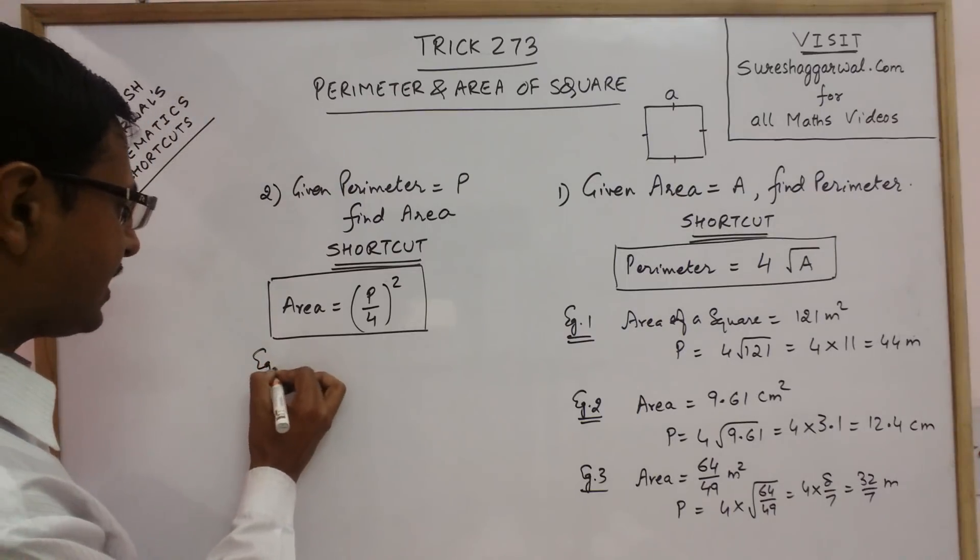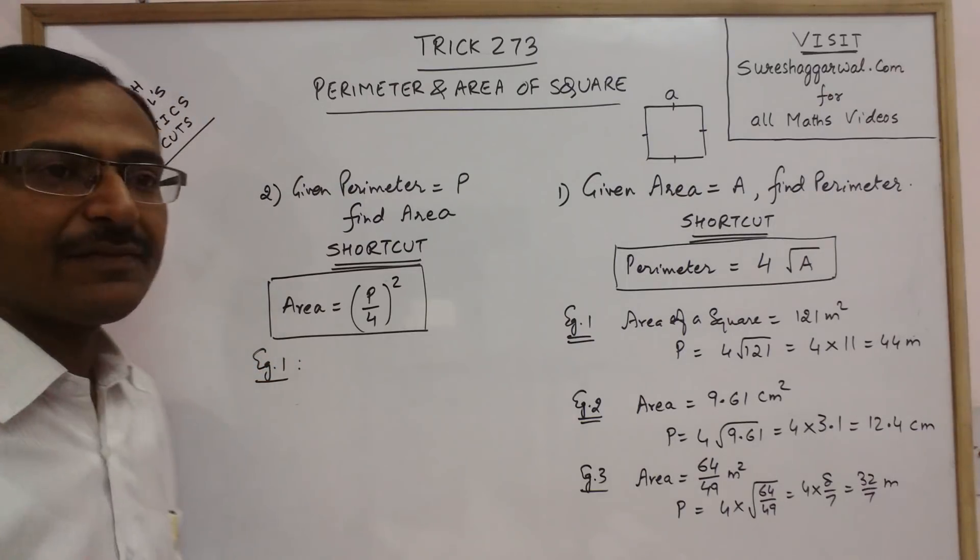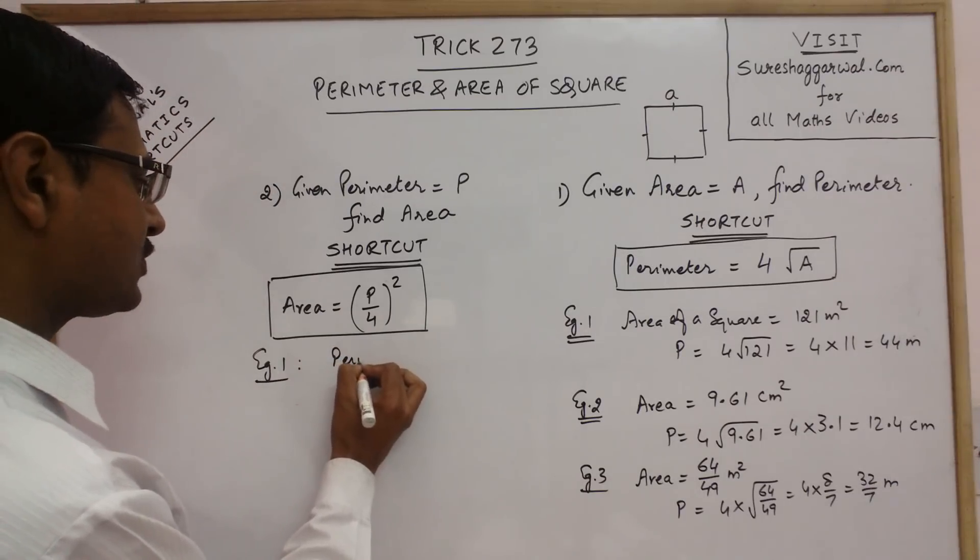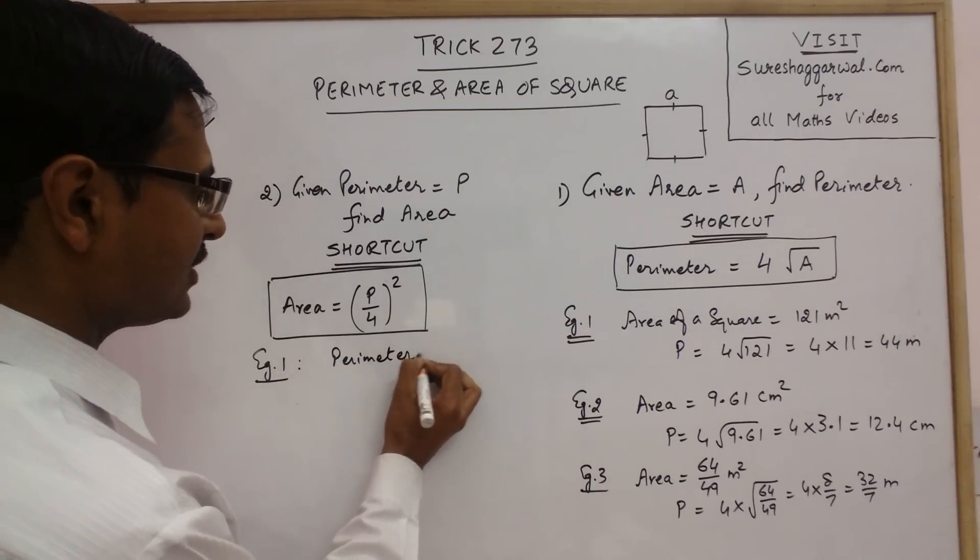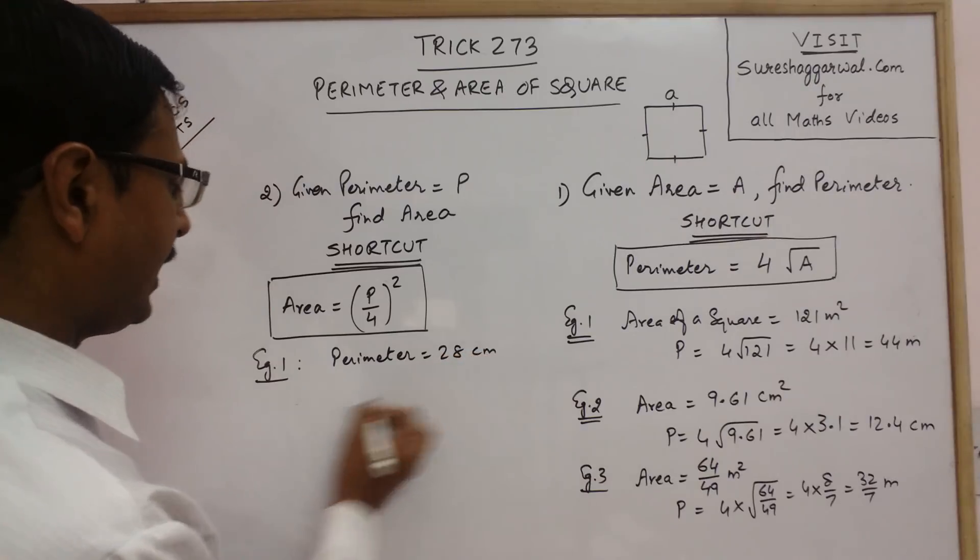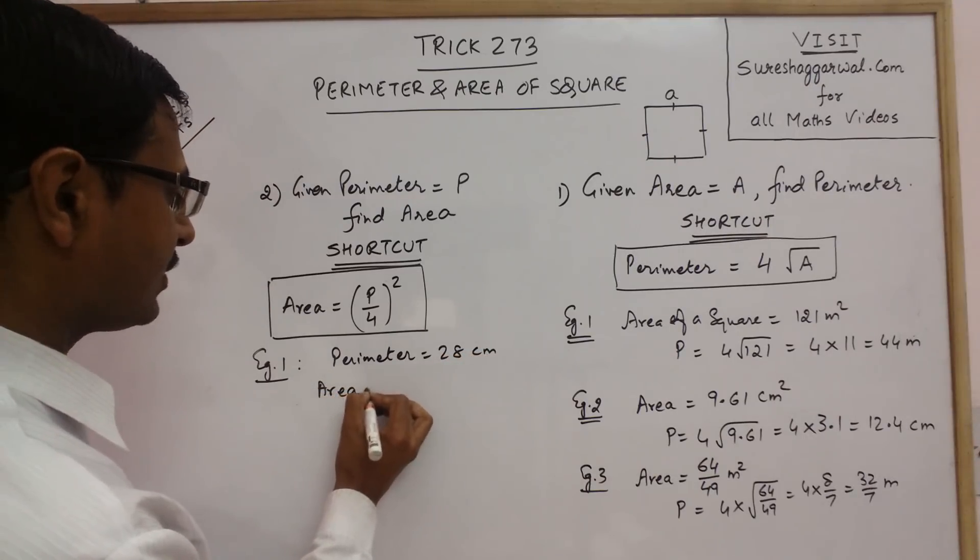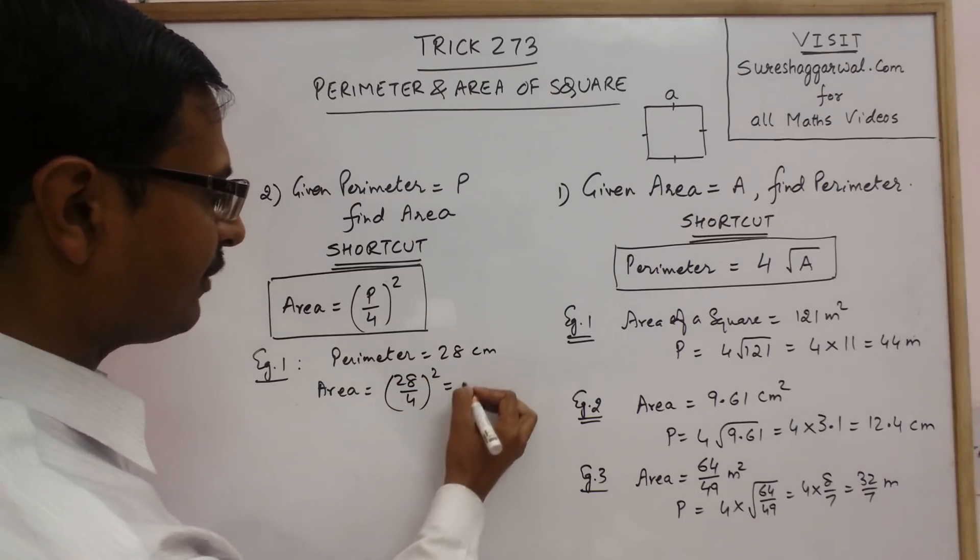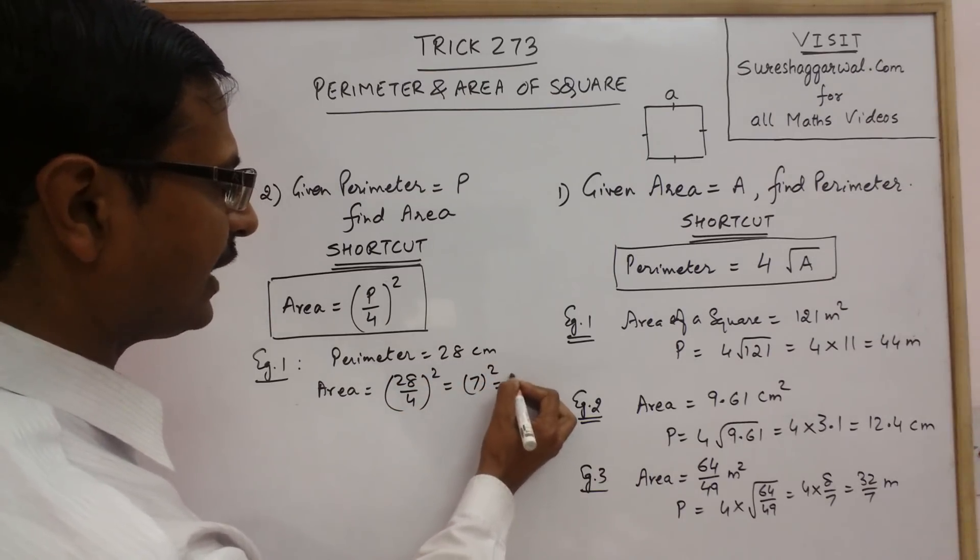Now take some examples here. Example 1: In the first example, I take the perimeter as 28 centimeter. Suppose we are given that the perimeter is 28 centimeter and I need to find the area of the square. Just divide the perimeter by 4 and square it. 28 divided by 4 is 7, 7 square is 49, so 49 centimeter square is the area.